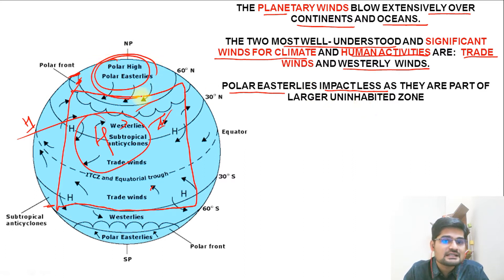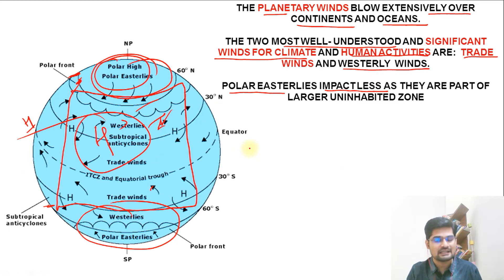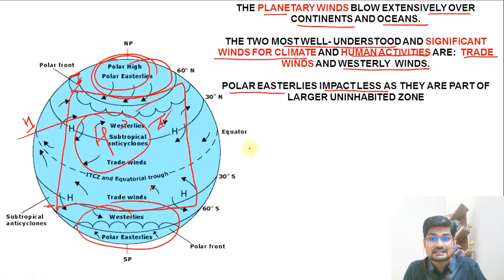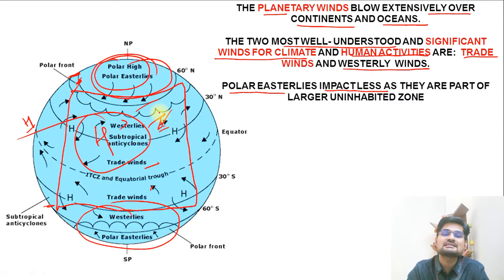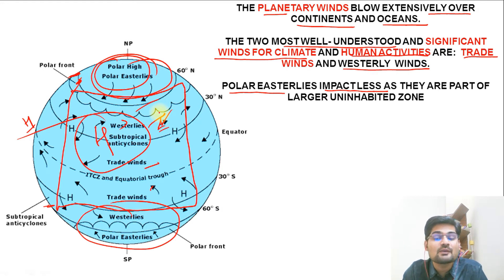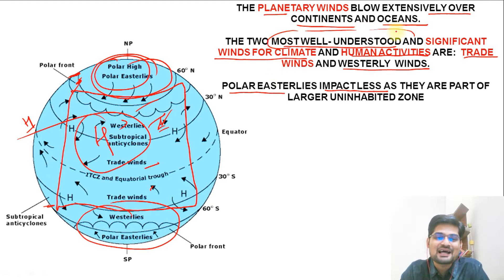The polar easterlies have less direct significance for human beings because not much population lives in polar areas. However, in terms of global climate change and the global climate system, they hold a key role. Trade winds and westerlies cover the maximum of the human horizon, which is why they are considered the most well-understood planetary winds out of the three.